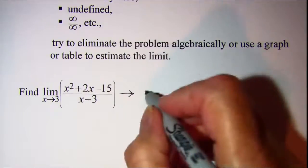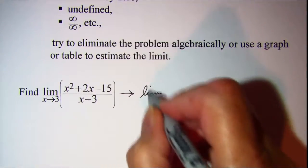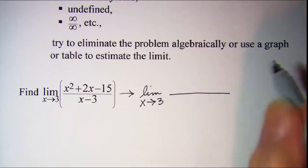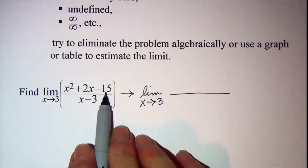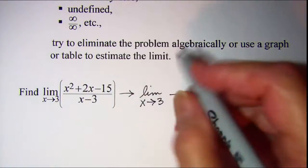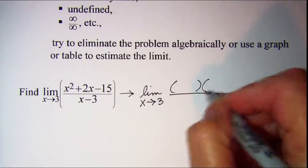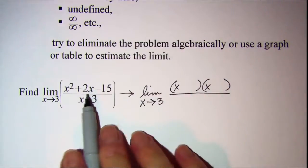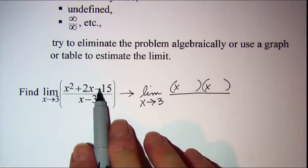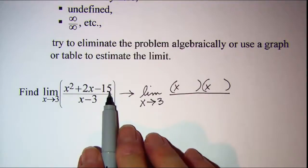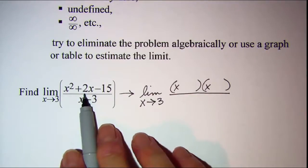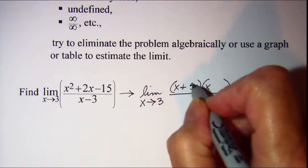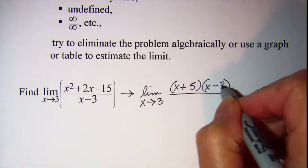So what we'll do then, we're still finding the limit as x approaches 3, but this trinomial can be factored. So if we factor this, put an x in both of the first spots. Two numbers that multiply to give me negative 15 and add to give me a positive 2 would be a positive 5 and a negative 3.